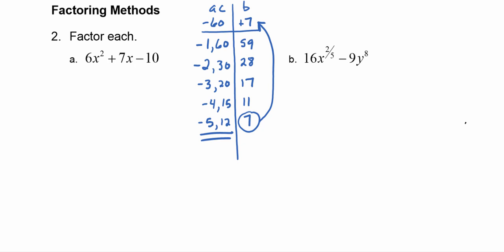These numbers tell us how to break up the 7x. We take the 7x and turn it into minus 5x plus 12x, in either order. The first term, 6x squared, comes straight down. The last term, minus 10, comes straight down. Those are unaltered.